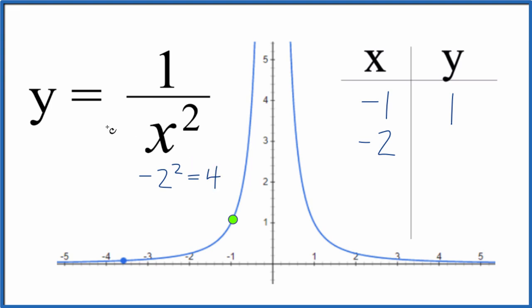y equals 1 over 4. So we get one fourth. We put that on our graph here at x equals negative 2, and we go up. Here's 1, so about right here. There it is, our next point.